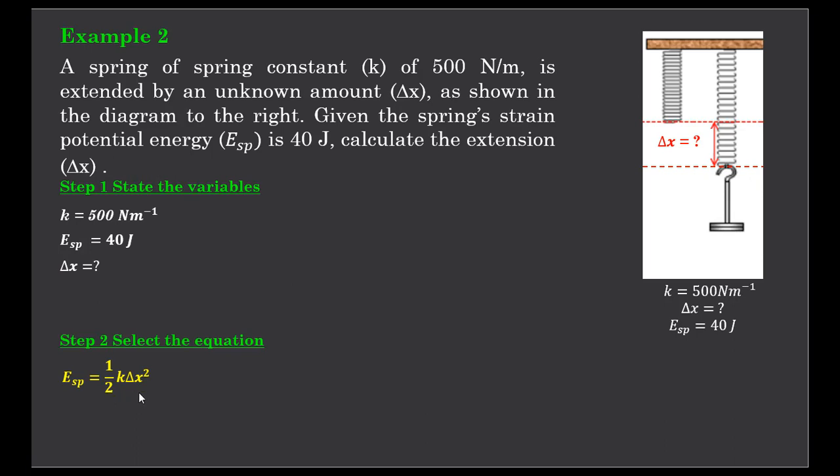The equation is as we used before: strain potential is half K delta x squared. Now we sub in our values. So strain potential is 40 joules, K our spring constant is 500, and delta x is unknown. So let's simplify this. Half of 500, we can say it's 40 equals 250 times delta x squared.